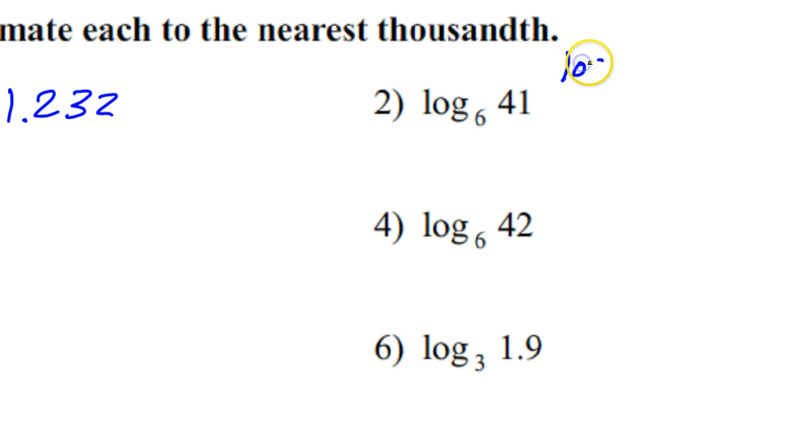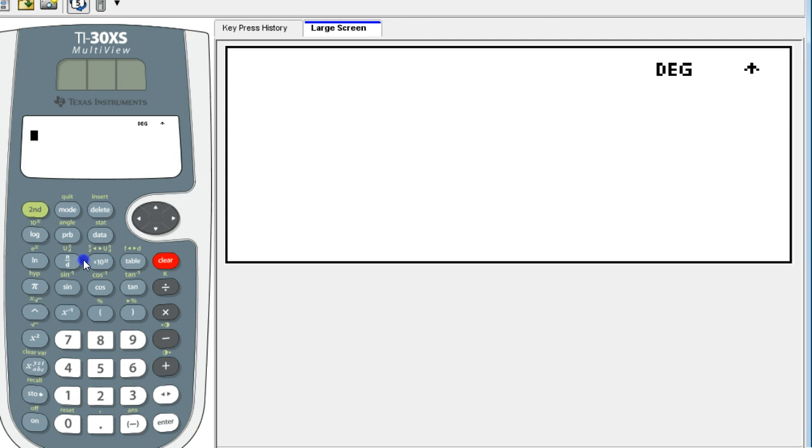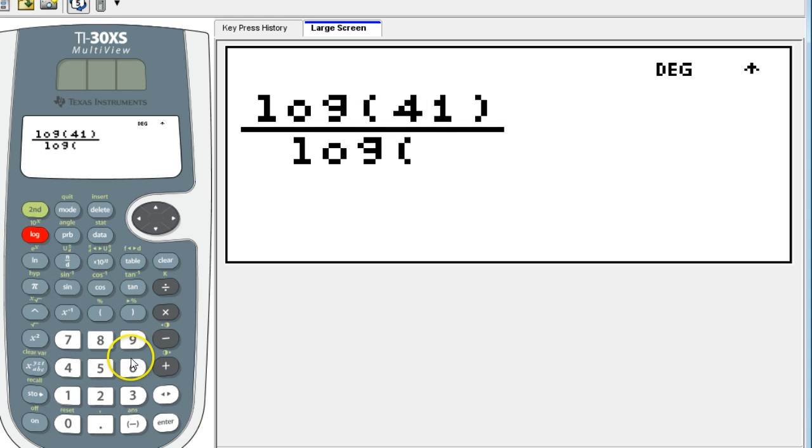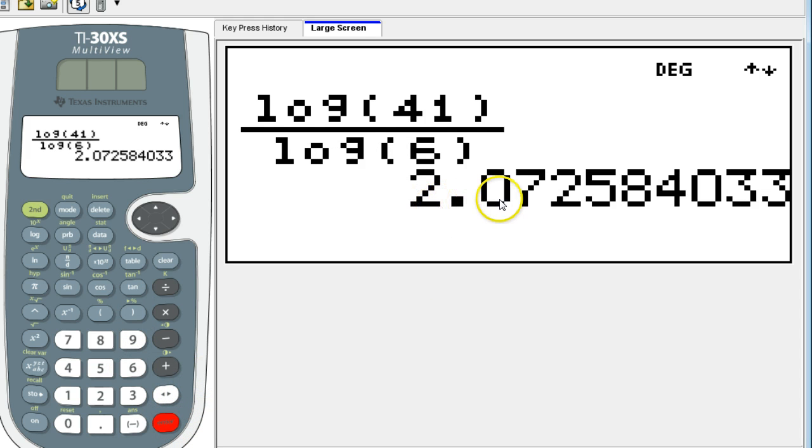So this is going to be log of 41 over log 6. Just put that in your calculator. Log of 41 over log 6. Okay, 2.073.